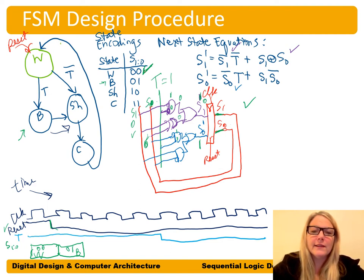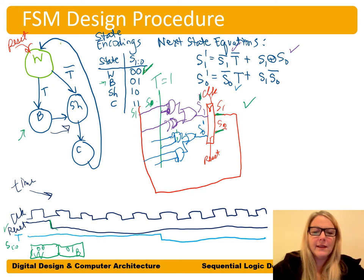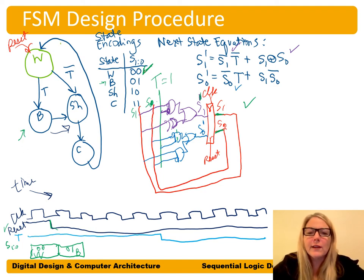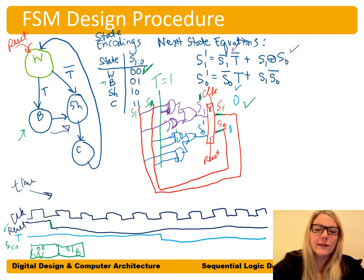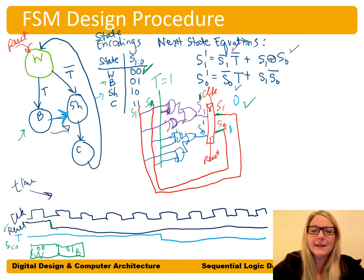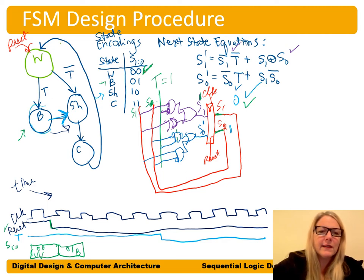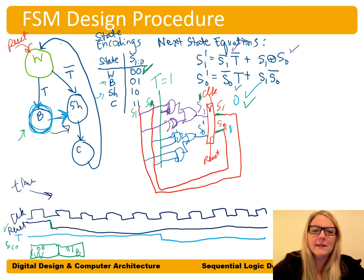Now in the 01 (B) state, those state bits feed back into the next state logic. We expect to go to the shower state (10). With S1=0, S0=1, and T=1 (though T doesn't affect this transition): S1 prime gets 0_bar AND 1_bar = 0 on the top gate, then S1 XOR S0 = 0 XOR 1 = 1, so S1 prime = 1.